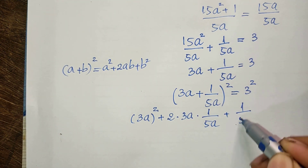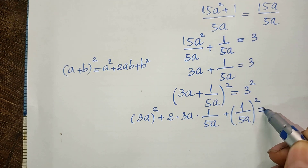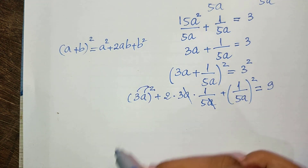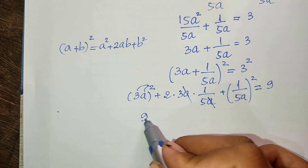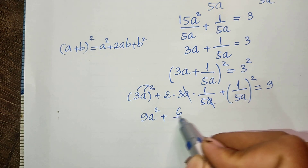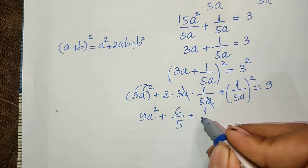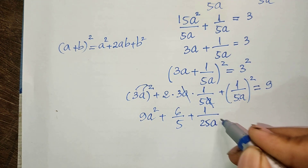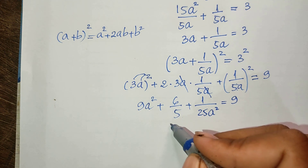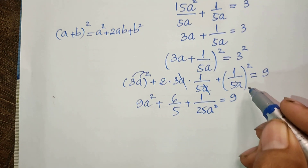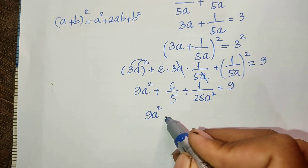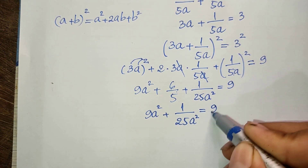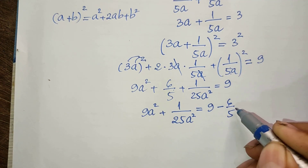This equals 9. Simplifying each term: (3a)² gives 9a², the middle term 2 times 3a times 1/(5a) gives 6/5, and (1/(5a))² gives 1/(25a²). So we have 9a² plus 6/5 plus 1/(25a²) equals 9. I move 6/5 to the right-hand side: 9a² + 1/(25a²) equals 9 minus 6/5.